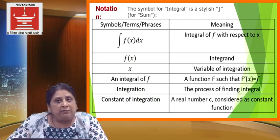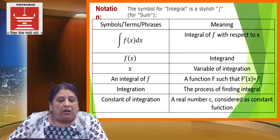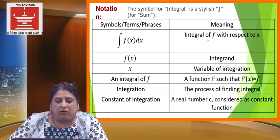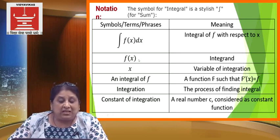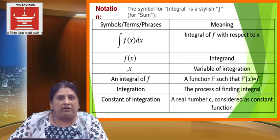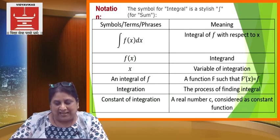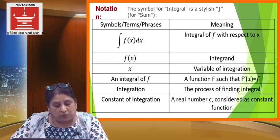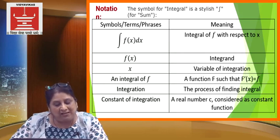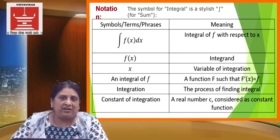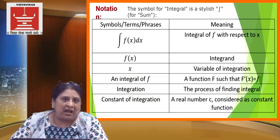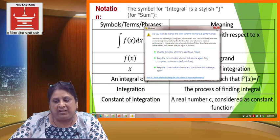Terminology and the meaning of each symbol: integral f of x — how do we write it? It is the integral of function f with respect to x. f of x is called the integrand. x is called the variable of integration. Integral of f means a function capital F such that capital F dash of x is equal to small f. Integration means the process of finding the integral. The constant of integration, denoted by the letter c, is a real number considered as a constant function. Since the derivative of the constant function is 0, we have no harm in adding that constant at the end of the answer when we integrate the given function.